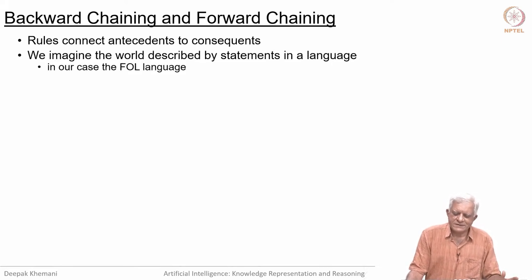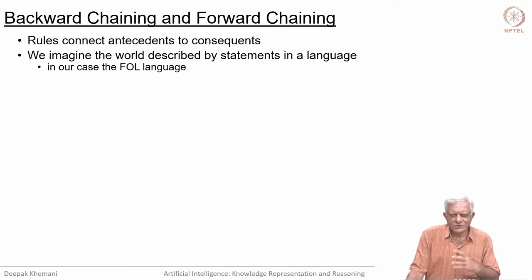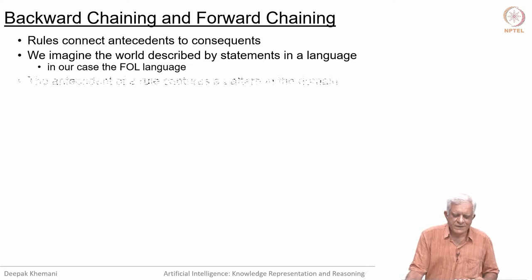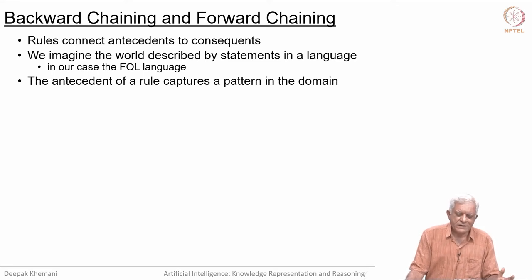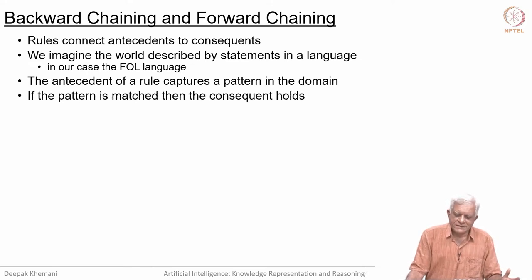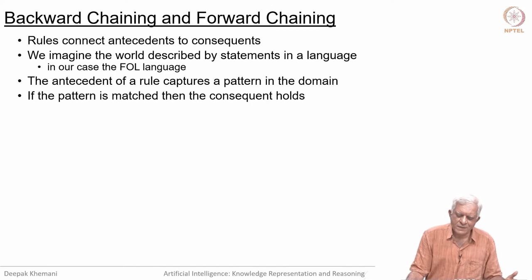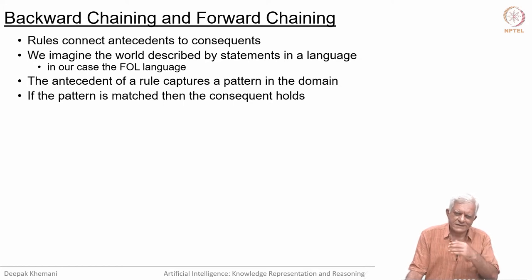We imagine the world described by statements in some language—in our case, first-order logic. We will write rules which look at subsets of this knowledge base or look for patterns in it. The antecedent of a rule captures a pattern in the domain; if the pattern is matched, then the consequent holds true. If you are doing logical reasoning, you assert that the consequent is true. The idea of rule-based systems is more general than just making inferences—you can also trigger actions.